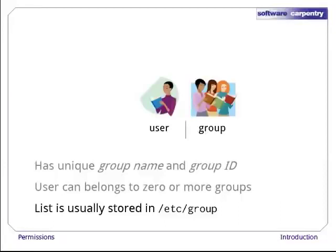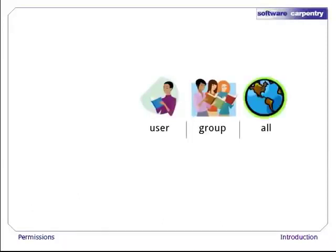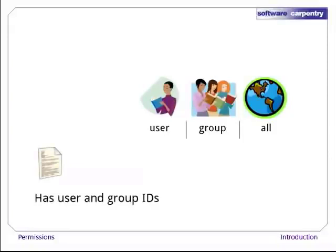If you're in front of a Unix machine right now, or are using Windows and have Cygwin installed, take a moment and have a look at that file. The third part of the Unix user model is called all — it's everyone else, i.e., everyone who isn't the user we're currently concerned with or a member of any of the groups we're considering. Now let's look at files and directories. Each file stores the user ID of its owner and the group ID of its owning group. This means that every user on the system falls into one of three categories: the owner of the file, someone else who's in that file's group, and everyone who doesn't fit into the first two categories.